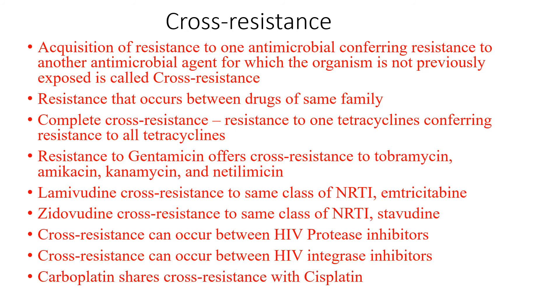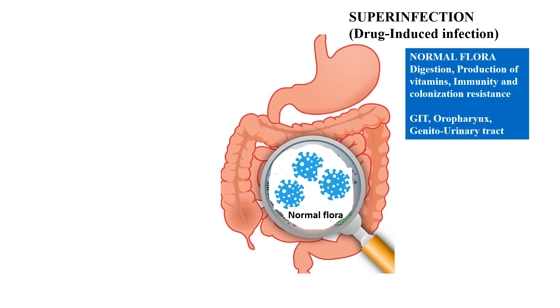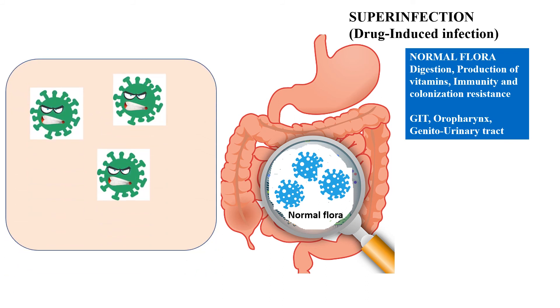Superinfection is a new infection that arises during antimicrobial treatment for an existing infection — also called drug-induced infection. Our gastrointestinal and genitourinary tracts contain normal flora — bacteria that live without causing harm. Normal flora aids digestion, vitamin production, and provides immunity. They are symbiotic. A pathogen, by contrast, causes disease and is not part of normal flora.